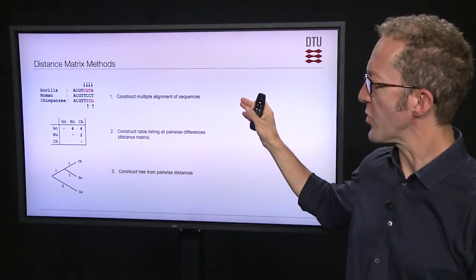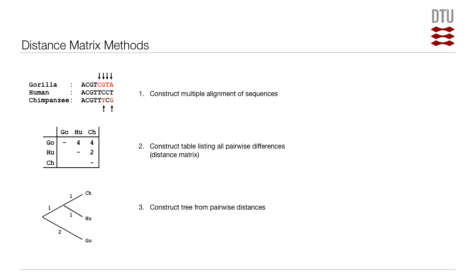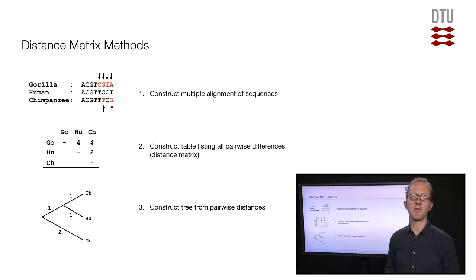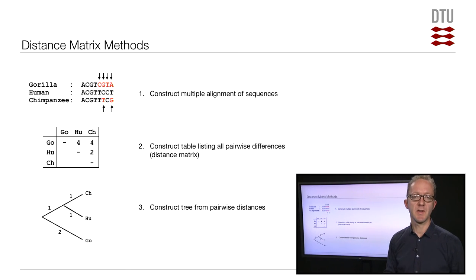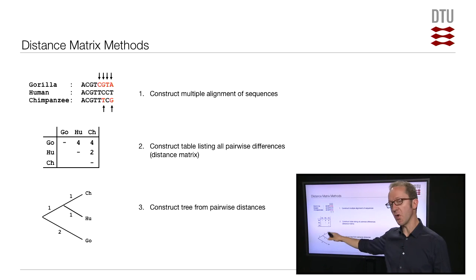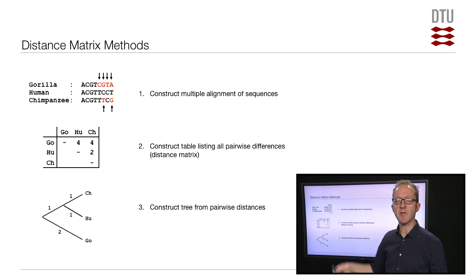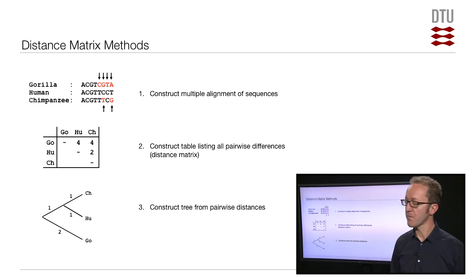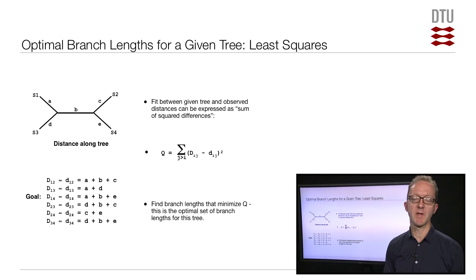As you recall, distance-based reconstruction has as its starting point, like the other methods, a multiple alignment. Step one is to construct the distance matrix, which is just a table of all the pairwise distances between the sequences. The number of mutations between each pair of sequences is the genetic distance. Based on that distance matrix, we then try to construct a phylogenetic tree such that the patristic distance — the distance measured along the branches — is the same as the observed distances from the multiple alignment.